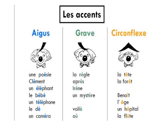Now let's look at the uses of these accents with examples. For accent aigu: un poésie, clamon, un éléphant, la bébé, un téléphone, la dé, un caméra. For accent grave, examples include: la règle, après, très, mistri, vuela.